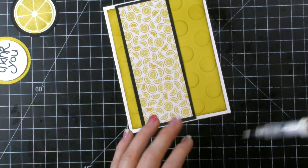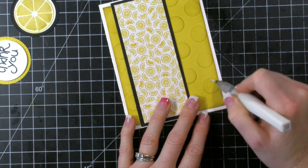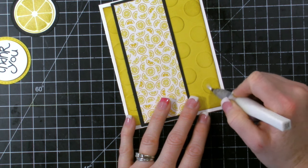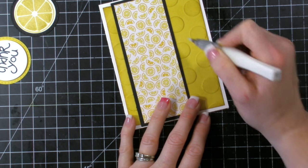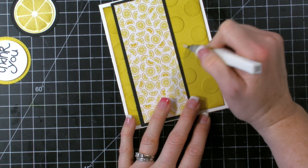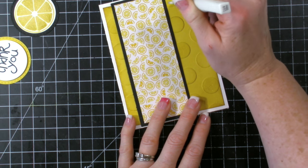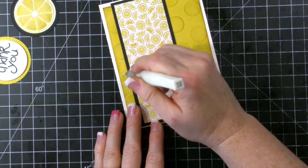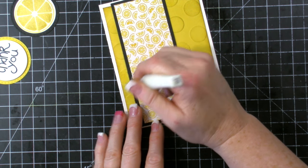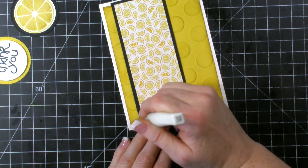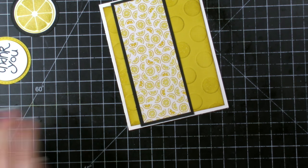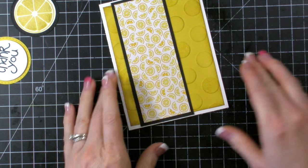So next we're going to use our Wink of Stella brush again. And on these circles that are popping up right here, on just a couple of them, I'm going to add some Wink of Stella and just give it some glitter. I'm having to pinch my Wink of Stella brush a little bit just to get that coverage. And we'll do this one. So we can be done with our Wink of Stella brush.